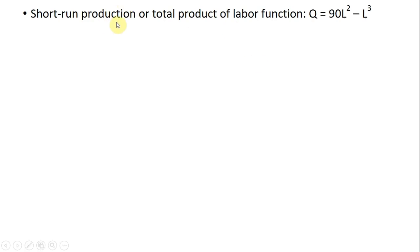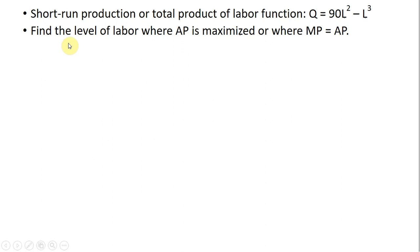Here we have a short-run production function where short-run capital is fixed — we might also call this the total product of labor function — giving us a level of output from any given quantity of the labor input. We want to find the level of labor where average product is maximized, or where marginal product equals average product. These two things are equivalent: when average product is maximized, it will also equal the marginal product of labor.